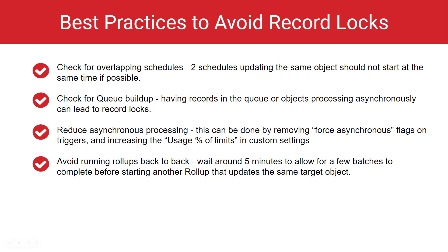Check for overlapping schedules — two schedules updating the same object should not start at the same time if possible. Check for queue buildup, as having records in the queue or objects processing asynchronously can lead to record locks. Reduce asynchronous processing by removing force asynchronous flags on triggers and increasing the usage percentage of limits in custom settings.